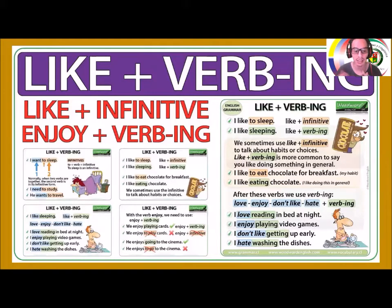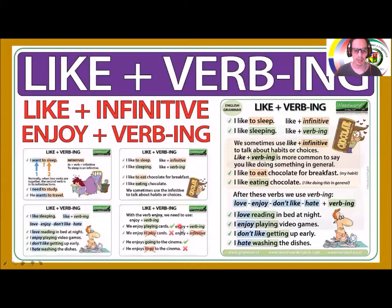I don't like getting up early — a mí no me gusta levantarme temprano. All the verbs add -ing for the progressive form. However, 'enjoy' needs the -ing form specifically. For example: we enjoy playing cards — yo no puedo usarlo en la forma infinitiva. He enjoys going to the cinema — NOT 'he enjoys to go to the cinema' — eso está incorrecto.